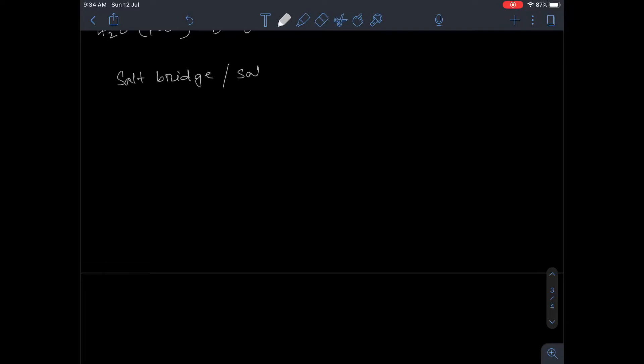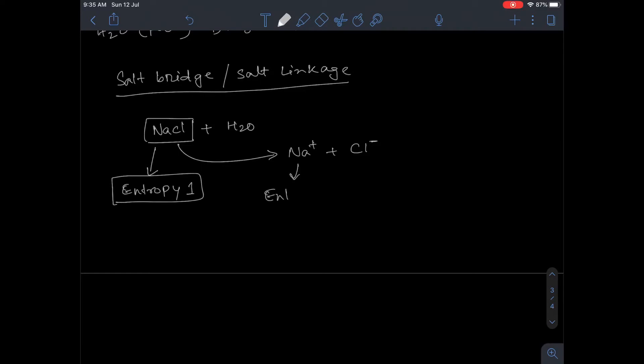Now we'll discuss salt bridge or salt linkage, also called saline bond. When NaCl is present in water, it will disintegrate into Na+ and Cl- ions. NaCl has its own entropy, entropy 1. Na+ has its own entropy, entropy a, and Cl- has entropy b. Entropy 1 is less than entropy a plus entropy b.